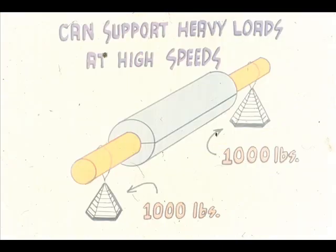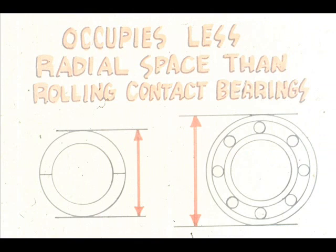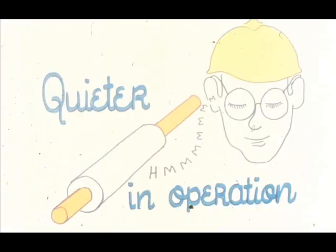Now let's examine some of the advantages and disadvantages of sleeve bearings. Sleeve bearings can support very heavy loads at high speeds. They usually require less radial space for installation, which is a very important consideration in some machines and equipment. Sleeve bearings are also normally quieter in operation than most rolling contact bearings, since they have no moving parts.